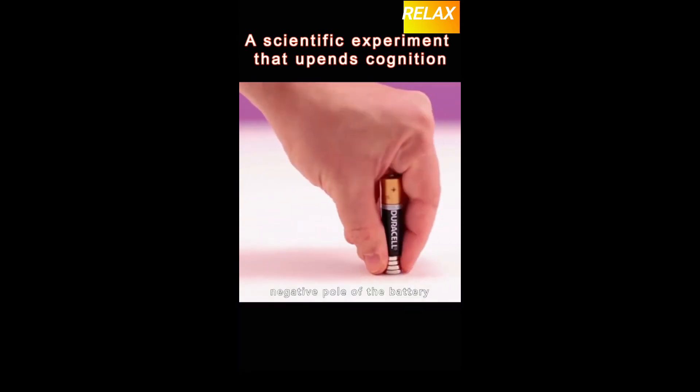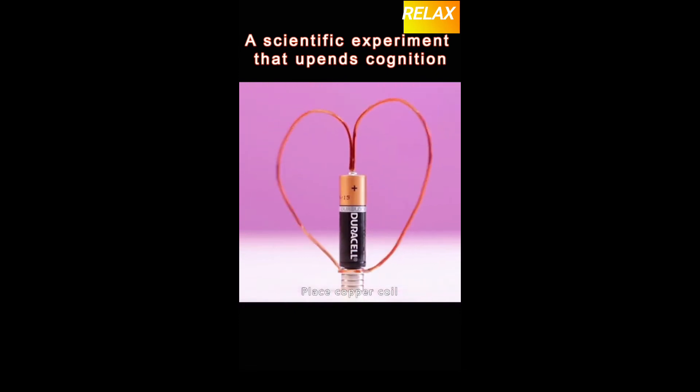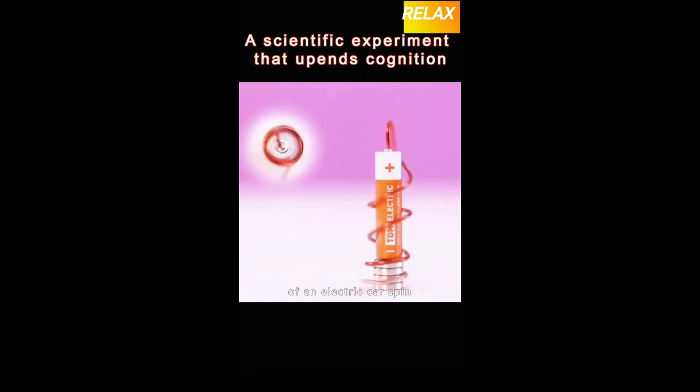Attract a magnet to the negative pole of the battery. Place copper coil on the positive pole. This is how the wheels of an electric car spin.